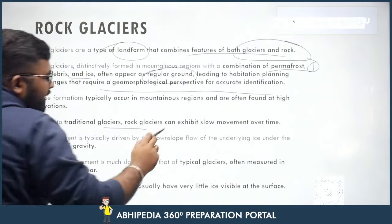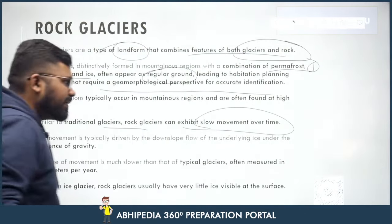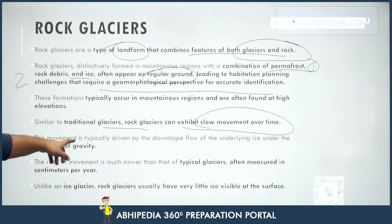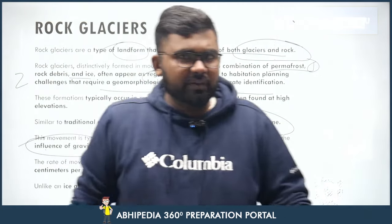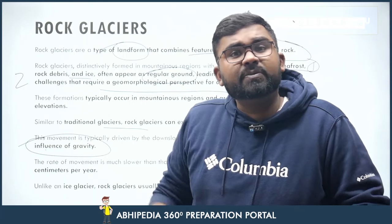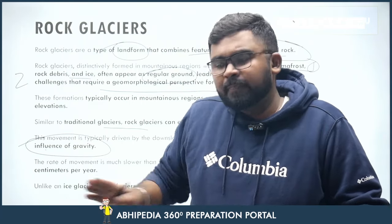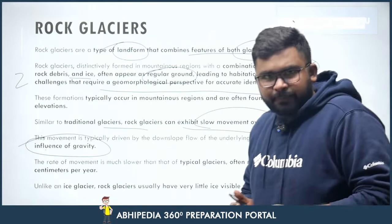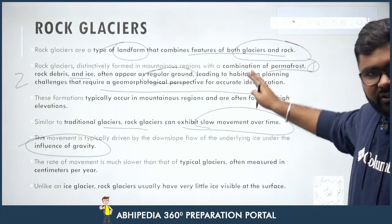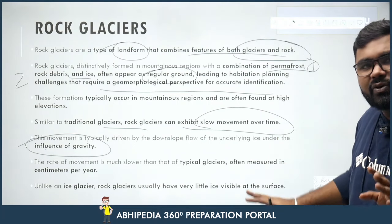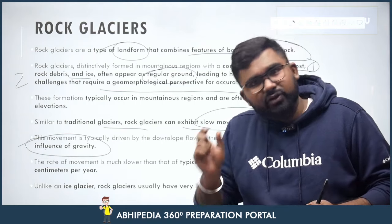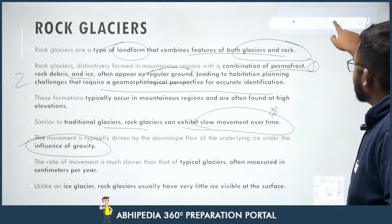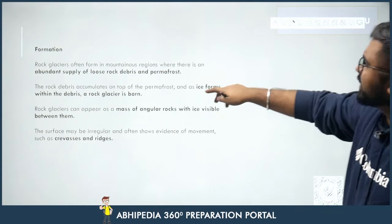Similar to traditional glaciers, rock glaciers can exhibit slow movement over time. This movement is typically driven by downslope flow of the underlying ice under the influence of gravity — terms you would have studied in your geography books, especially NCRT, covering mass movement, erosion, and weathering. Please comment below the specific geography/geomorphology term used to denote this slow movement.